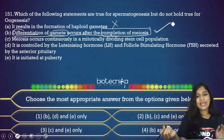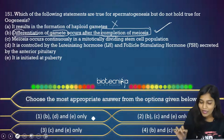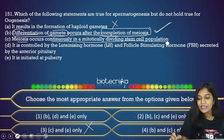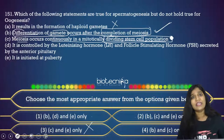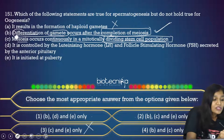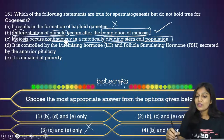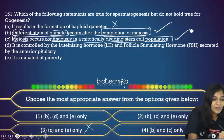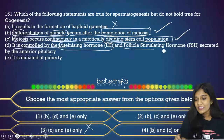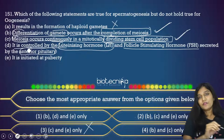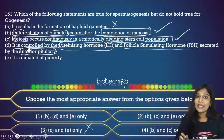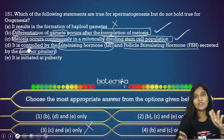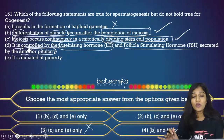We can eliminate option three. Option C: 'Meiosis occurs continuously in mitotically dividing stem cells' — this happens specifically in spermatogenesis only; meiosis never happens continuously in females. So this is true for spermatogenesis but not oogenesis. Option D: 'It is controlled by LH and FSH secreted by the anterior pituitary' — sperm production requires LH and FSH, but so does oogenesis, so this applies to both. We cannot choose this option.